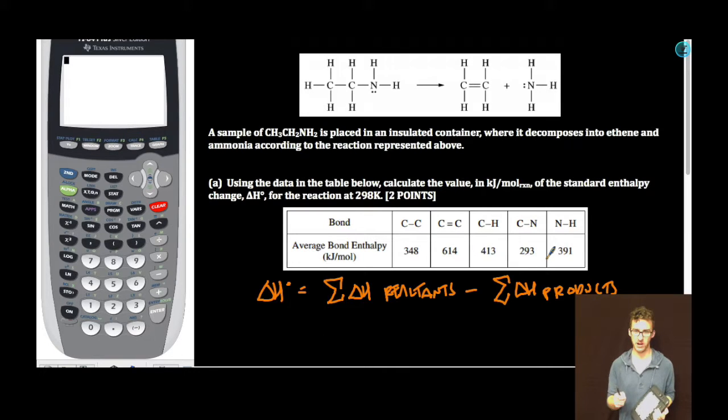The first common error is failing to recognize that when you're working with bond energies, you're going to use enthalpy change of the reactants minus enthalpy change of the products, which is opposite from when we're doing heats of formation and is opposite of how the formula appears on your formula chart. So as I look at my Lewis structures and at my data table,